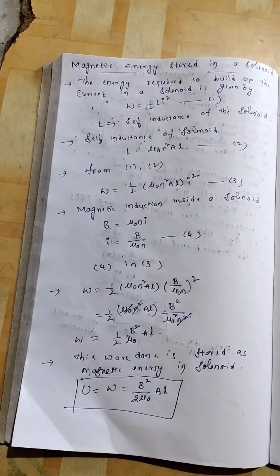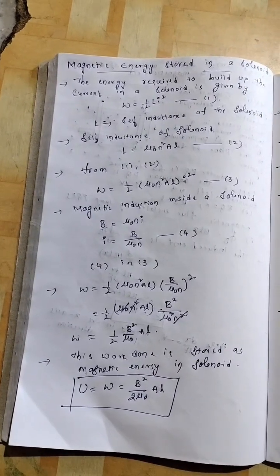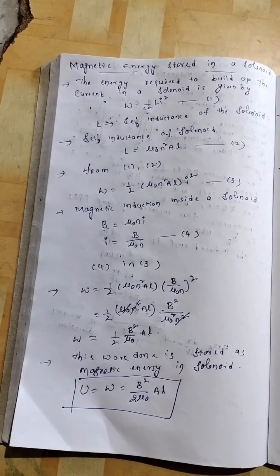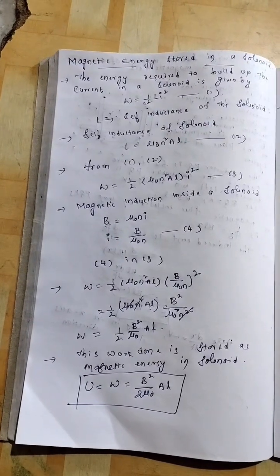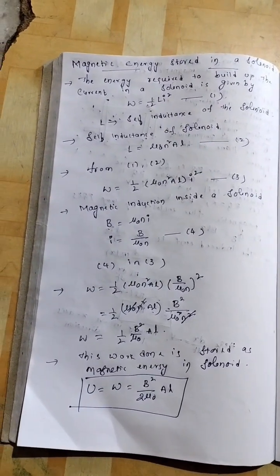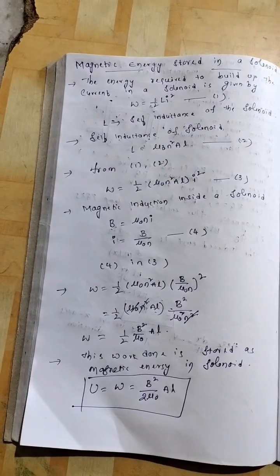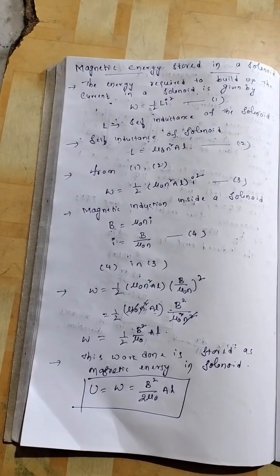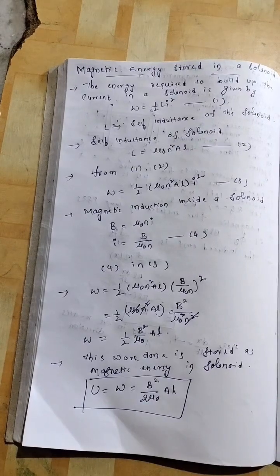Whole square. It becomes half mu0 n square al b square by mu0 square n square. n square n square strikes off. One mu0 strikes off. So, what is remained w equal to half b square by mu0 al. Correct? So, this is work done.